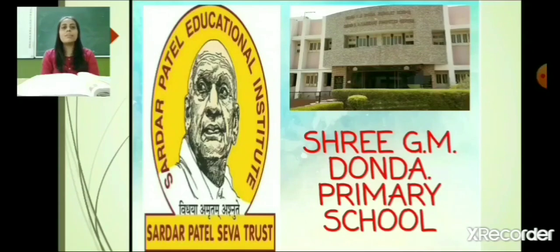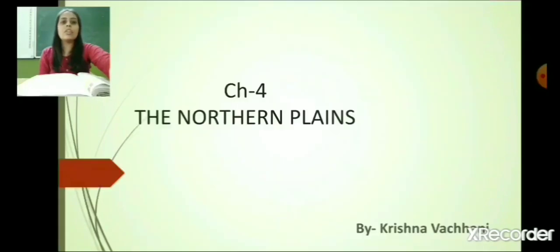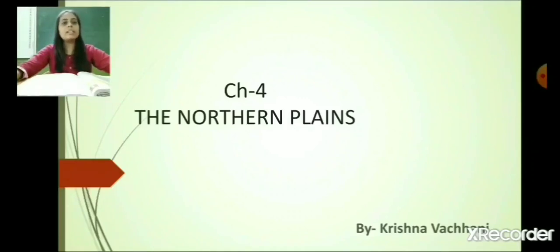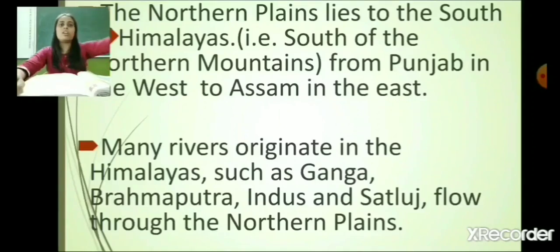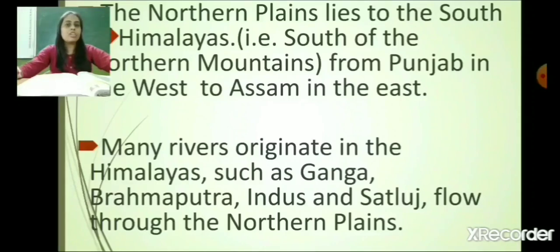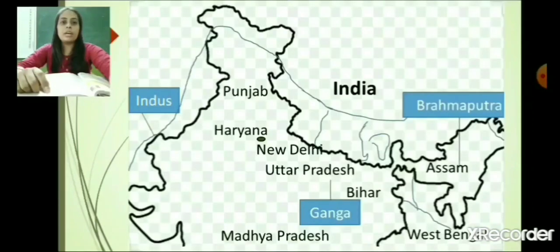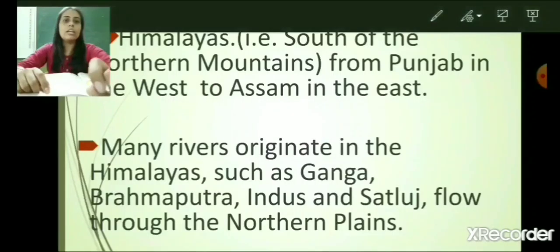In social science, we will learn chapter number 4 and the name of the chapter is 'The Northern Plains.' Chapter 3 was about the northern mountains; now we will see about the northern plains. The northern plains lie to the south of the Himalayas, from Punjab in the west to Assam in the east.